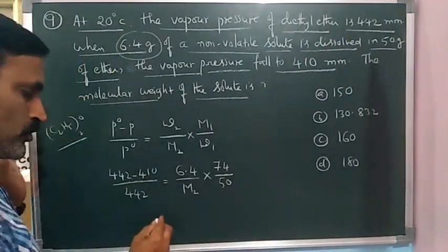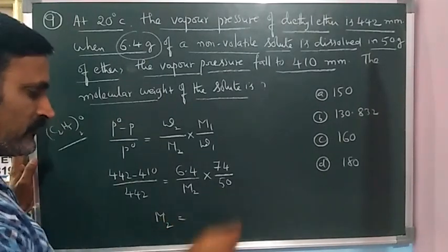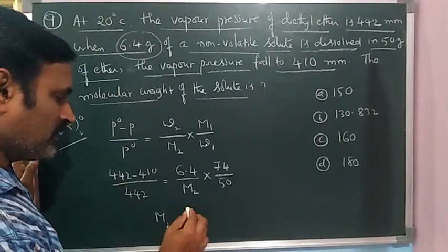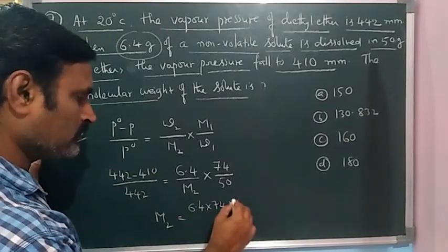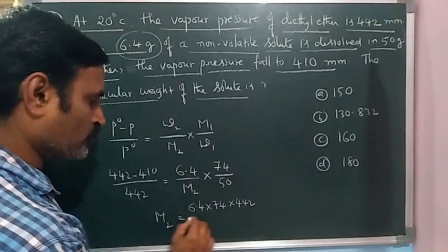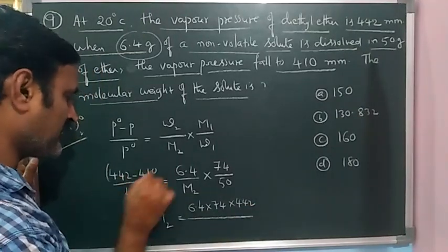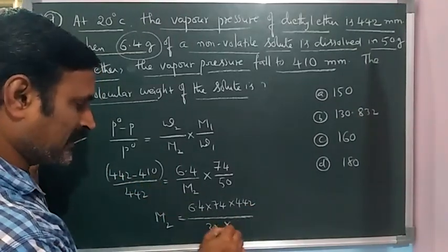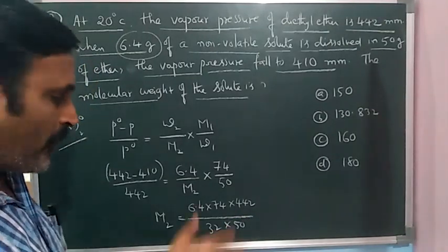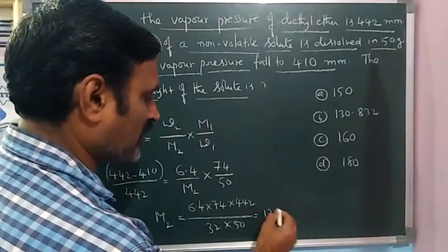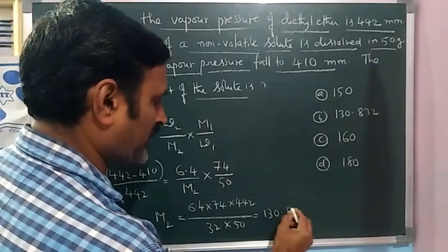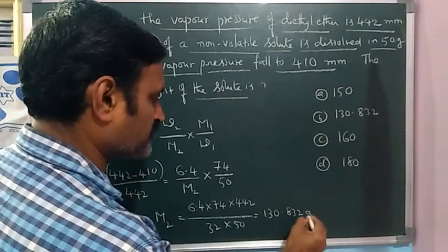Then we have to cross multiply everything and simplify. Then M2 will become equal to 6.4 into 74 into 442 divided by this difference which is 32, so 32 into 50. Upon simplification, we will get an answer that is 130.832 grams per mole.